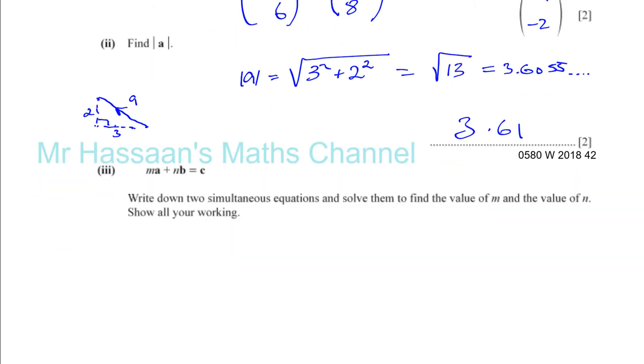It says ma plus nb equals c. Write down two simultaneous equations and solve them to find the values of m and the value of n. So I'll show all your working.